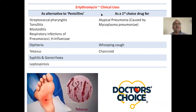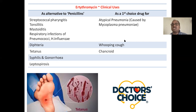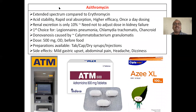Clinical uses of erythromycin: it is an alternative to penicillin for various infections. It is the first choice for atypical pneumonia (Mycoplasma pneumonia), whooping cough, and chancroid. Azithromycin, popularly known as 'AZ' or 'ATM' (a popular brand name), is another important macrolide.